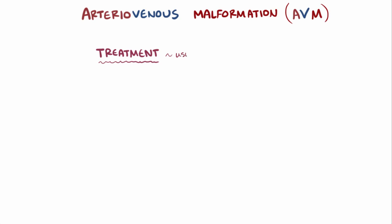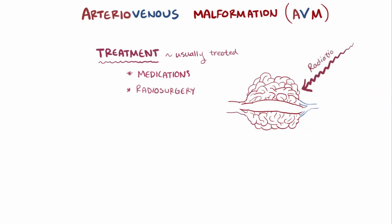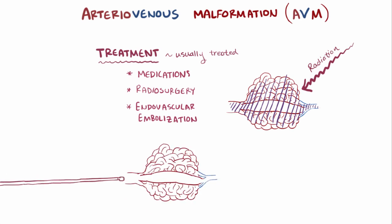Most AVMs are treated even if the person's not symptomatic, because of the risk of complications, like bleeding. Medications can be used to treat certain symptoms from an AVM, like headaches, but they might also have certain procedures, like radiosurgery, where beams of radiation are targeted at the AVM, causing the vessels to scar and close off. Or they might have endovascular embolization, where a catheter is used to obstruct the vessels. Because the location of the AVM varies so widely, usually the procedure varies on a case-by-case basis.